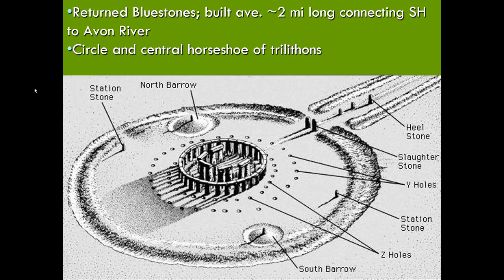After the blue stones were returned, a central avenue was built — approximately two miles in length — connecting Stonehenge to the River Avon. It's not a straight avenue; it curves, which made the whole trip longer, though it's unclear why. A lot of the stones used for Stonehenge construction are actually missing today, and it's unclear whether they were moved for more monuments or taken away by others. After this final layout, Stonehenge is abandoned about 1500 BC and remains abandoned for over a thousand years.